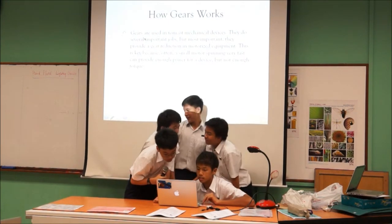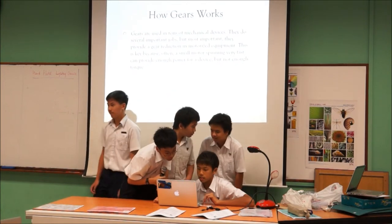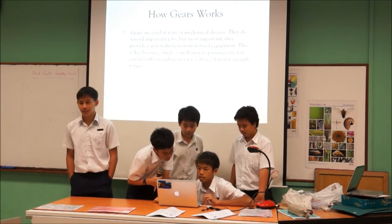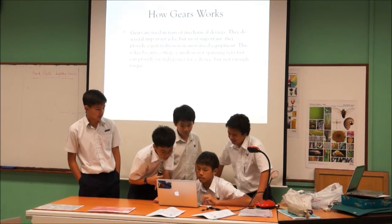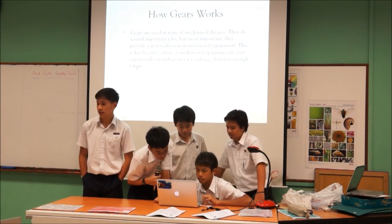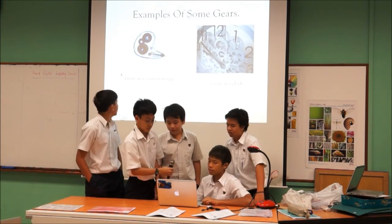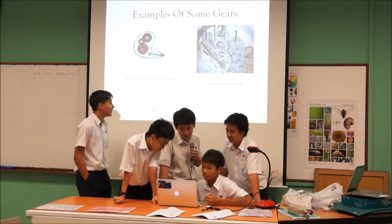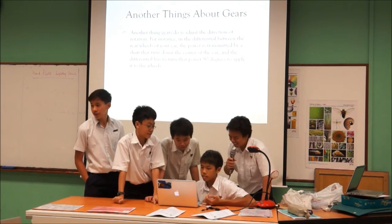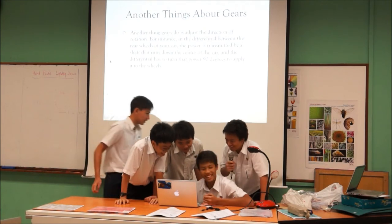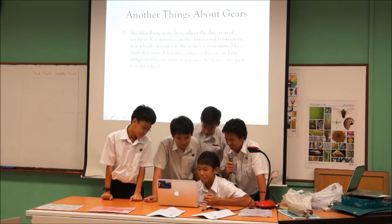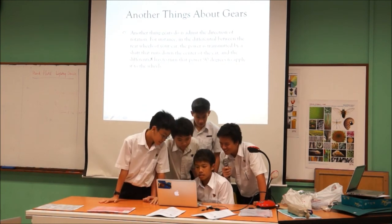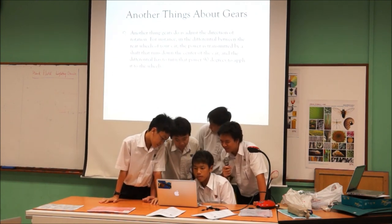How do gears work? Gears are used in tons of mechanical devices. They do several important jobs, but most importantly they provide gear reduction in motorized equipment. This is key because often a small motor spinning very fast can provide enough power for a device, but not enough torque. Some pictures show examples of gears, like the correction tape and the gears in a clock. Another thing gears do is adjust the direction of rotation — for instance, in the differential between the wheels of your car. The power is transmitted by a shaft that runs down the center of the car, and the differential has to turn that power 90 degrees to apply it to the wheels.